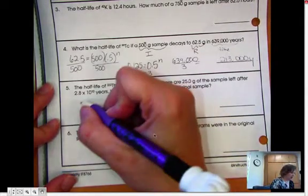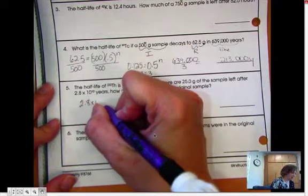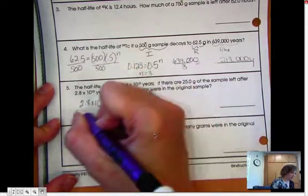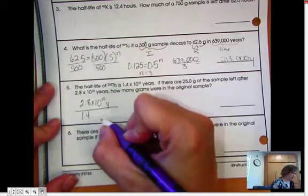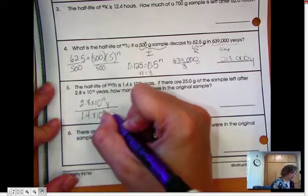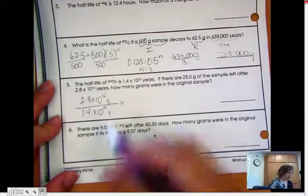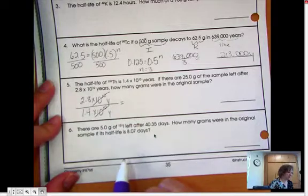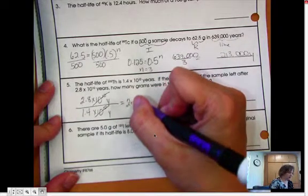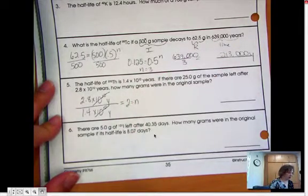The total amount of time is 2.8 times 10 to the 10th years. And the half-life is 1.4 times 10 to the 10th years. So hey, look at that. The 10 to the 10 completely cancels out. And you have 2.8 divided by 1.4, which is 2. So that's really not that hard.